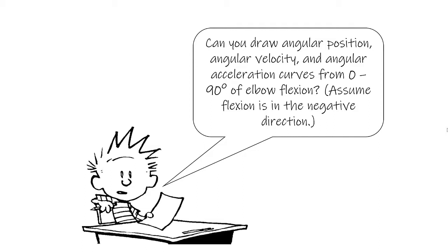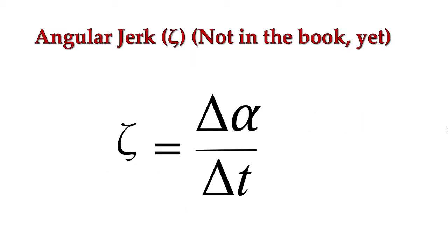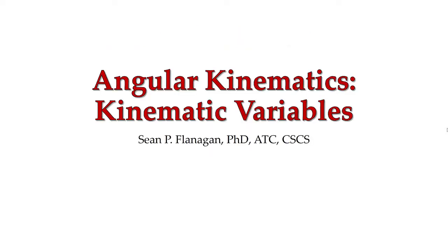One thing we will discuss in class is drawing an angular position, angular velocity, and angular acceleration curve from 0 degrees of elbow flexion to 90 degrees of elbow flexion, assuming elbow flexion occurs in the negative direction. Finally, angular jerk is how quickly our angular acceleration is changing, and it equals the change in acceleration divided by the change in time. Those are our kinematic variables for angular kinematics. Next, we'll be looking at how we convert those angular variables into linear ones.